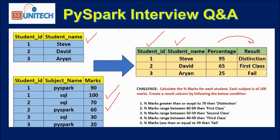Here you can see how we can calculate the percentage. For each student ID, we will sum the marks and divide by the total count of those subjects to get the percentage.